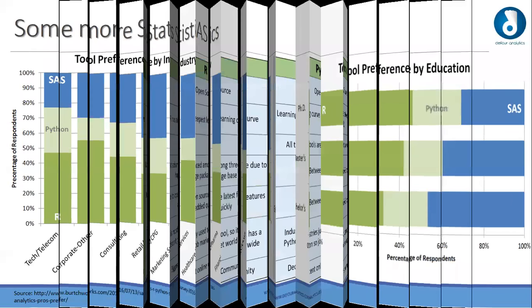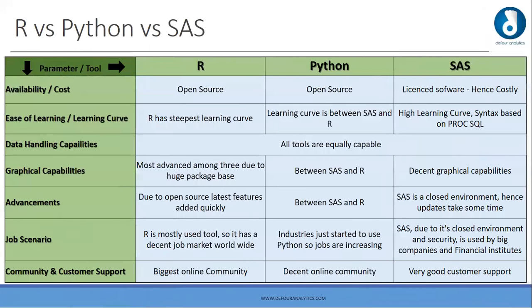Now comparing R versus Python versus SAS: in terms of availability, R is open source and available for everyone, similar to Python, whereas SAS is licensed software and is costly. In terms of ease of learning, R has the steepest learning curve — you need to know the technique to learn it. Python has a high learning curve but has built-in coding structures, so you need to learn those as well.